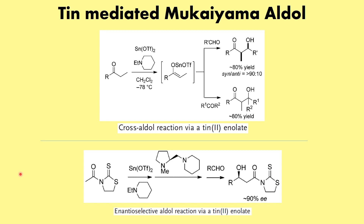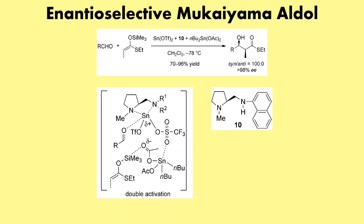An enantioselective version of this reaction also exists. Apart from the reagents used to form the tin enolate, a chiral ligand is employed. This chiral ligand coordinates with the tin, directing the approach of the incoming aldehyde from one face preferentially. This constitutes the enantioselective variant of the Mukaiyama aldol reaction, and questions on this type of example can also be asked in exams.